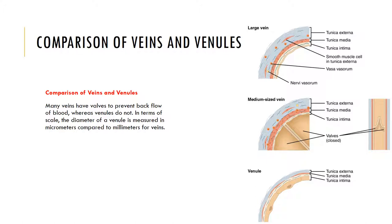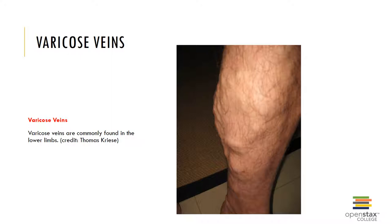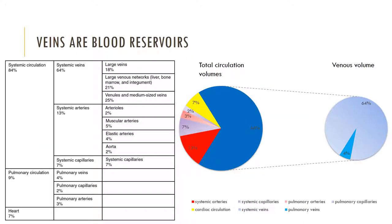Venules drain capillary beds into veins. Venules are extremely porous and are often more similar in structure and function to capillaries than to veins. Many venules possess only an endothelium and pericytes, while others may have a very scanty tunica media and a thin tunica externa. Varicose veins are commonly found in the lower limbs. Veins are typically the reservoir of blood, with about 65 percent of blood being in our veins at any one time in the human body.